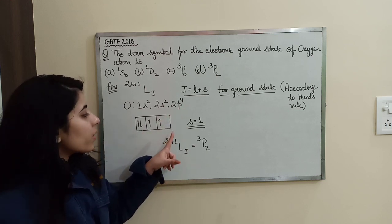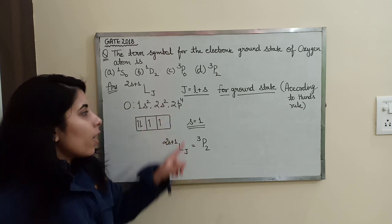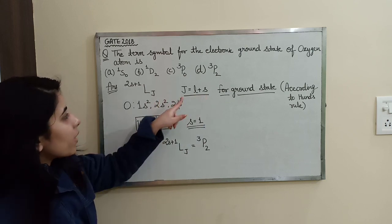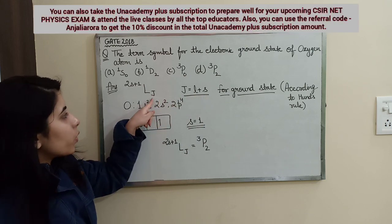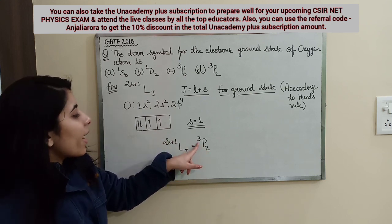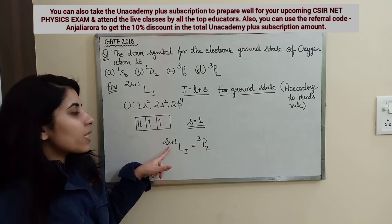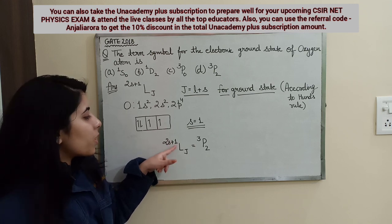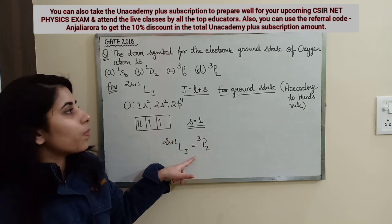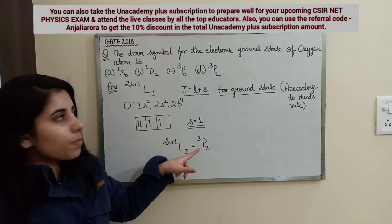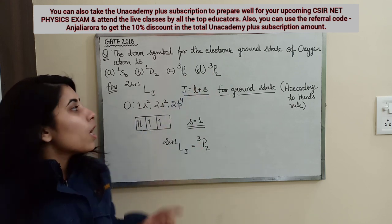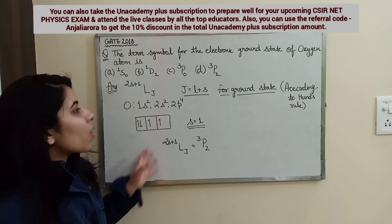So the value of L is 1. Then J = L + S = 1 + 1 = 2. For the ground state, J = 2. And 2S+1, where S = 1, gives 2×1 + 1 = 3. So this is going to represent the ground state spectroscopic term symbol ³P₂, which is option D — the correct option. You can see how easy it is to solve this kind of question.